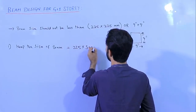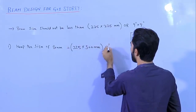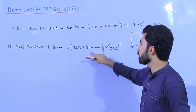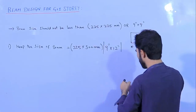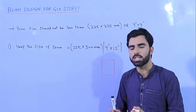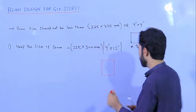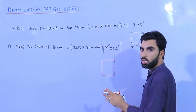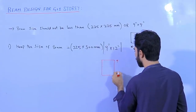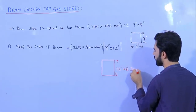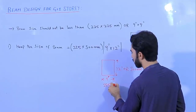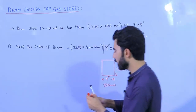I recommend keeping the beam size at 225 by 300 millimeters, or 9 inches by 12 inches, for G plus one story. The depth of the beam should be 12 inches or 300 mm, and the width should be 9 inches or 225 mm. We don't require a specific structural design for G plus one domestic buildings, but for commercial structures, proper design should be done.